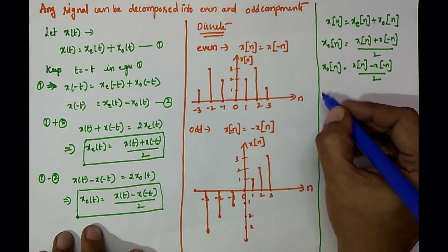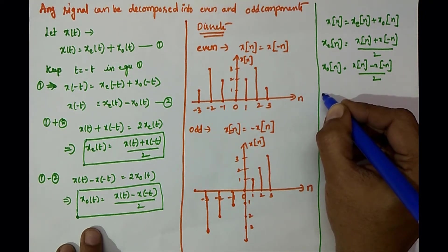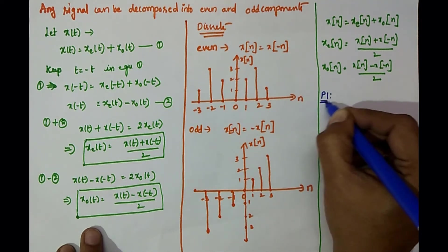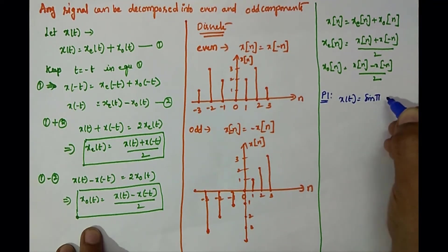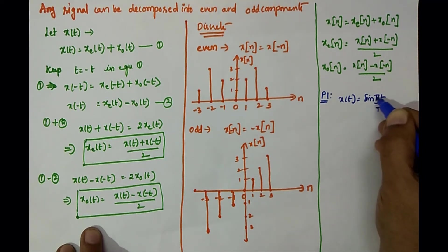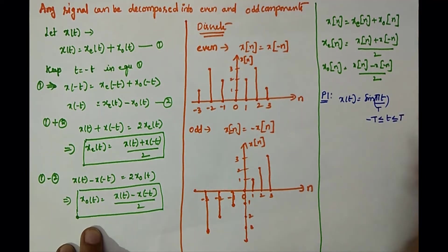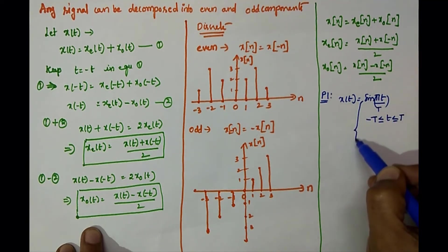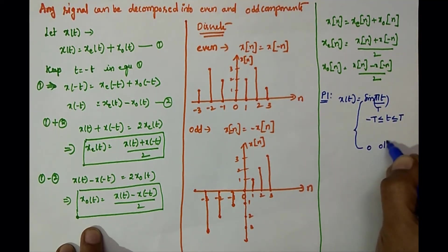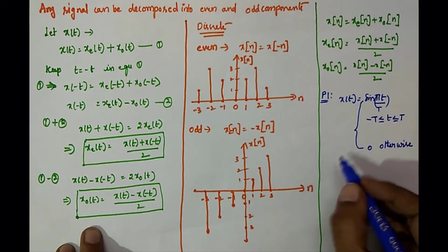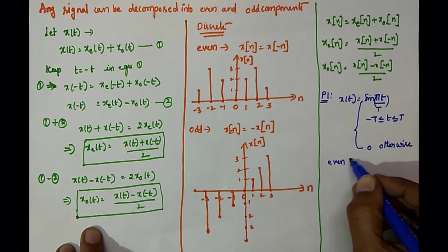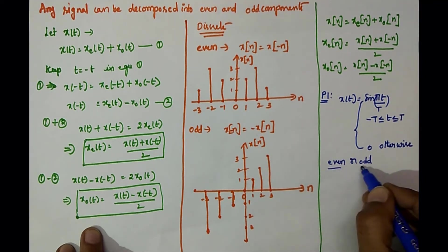Now we will do one problem on finding whether a given signal is even or odd. Problem number 1: Consider the signal x of t equal to sin(πt) divided by t, where minus capital T is less than or equal to t less than or equal to capital T, and 0 otherwise. Find whether the given signal is even or odd.